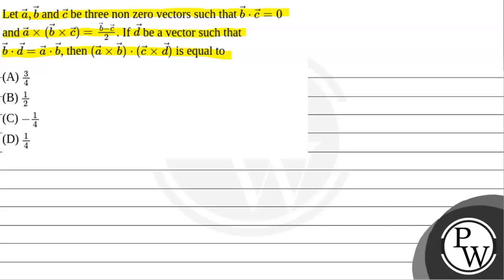Now use the key concept. The key concept: a×(b×c) = (a·c)b - (a·b)c. So this is the formula that we are going to use in this question.